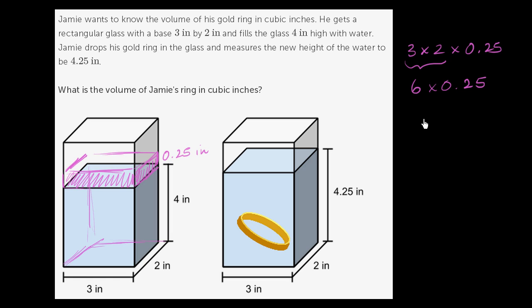1.5, and we multiplied inches times inches times inches, so this is in cubic inches. 1.5 cubic inches is the volume of Jamie's ring.